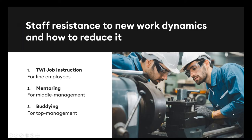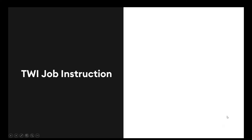How do you convince people about something new like e-learning? Our clients introduced a differentiated type of approach to mentoring that helps solve the particular challenges each group of employees has. Three main categories were created: TWI job instruction for line employees, mentoring for middle management, and budding for top management. There is also a challenge to inspire people to follow one corporate set of rules and a cultural code that exists only within a company.